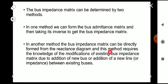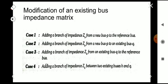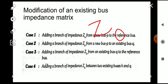In the second method, the bus impedance matrix can be directly formed from the reactance diagram. This method requires knowledge of the modifications of an existing bus impedance matrix due to the addition of a new bus or a new line between existing buses. We denote the original Z_bus of the system with n independent buses as Z_original.